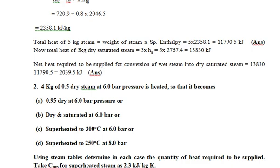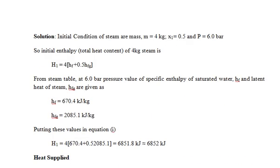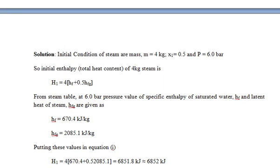First, identify the given data. Initial condition: mass of steam = 4 kg, dryness fraction x1 = 0.5, pressure = six bar. From the steam table at six bar, find values of hf and hfg. Then calculate the initial enthalpy H1 = hf + x1·hfg. Substituting the steam table values for six bar pressure, you get H1 = 6852 kJ for four kilograms of steam.